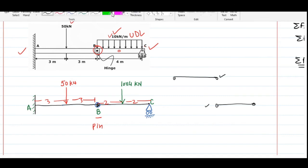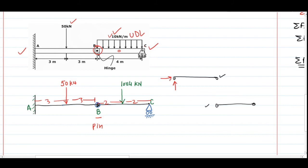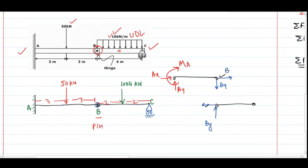At point A, which is a fixed joint, there are three reactions: Ay, Ax, and moment Ma. At point B, the reactions in each diagram are equal and opposite — if By acts downward in the top figure, it acts upward in the bottom. Since B is a pin joint, no moment appears. At joint C, a roller joint, the only reaction is Cy in the vertical direction. External forces are 50 kN and 40 kN. With six unknowns, this is a statically determinate problem.